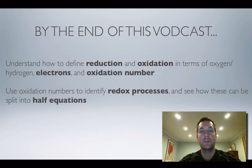So we're going to look at reduction and oxidation in terms of oxygen and hydrogen as well as electrons and oxidation number. And we're also going to use oxidation numbers to see if we can tell whether chemical reactions are redox processes or not, and how those redox processes could be split up into half equations.